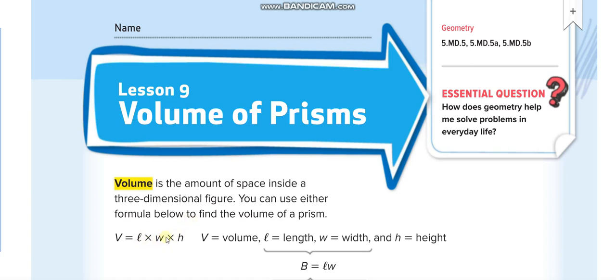But here, to find the volume of a three-dimensional figure, we have to multiply length times width times height. And as we have three attributes, we will write our answer in terms of cube, like cubic inch or cubic meter.